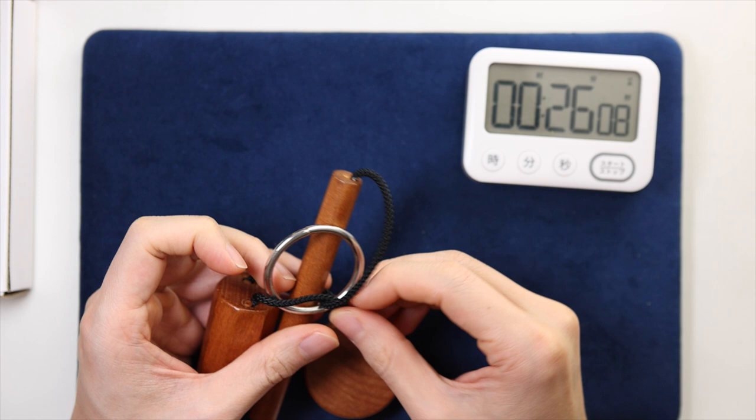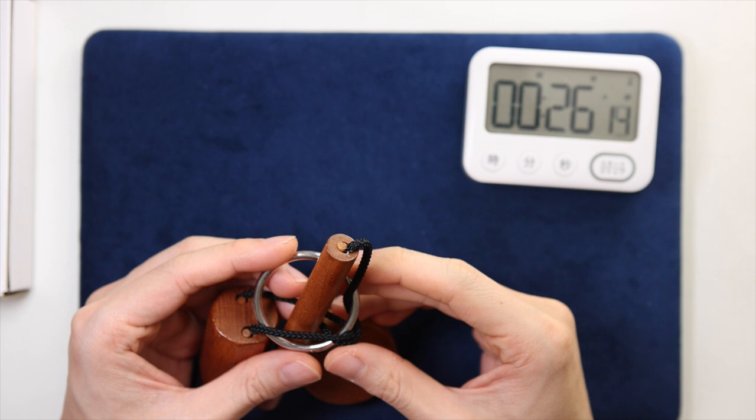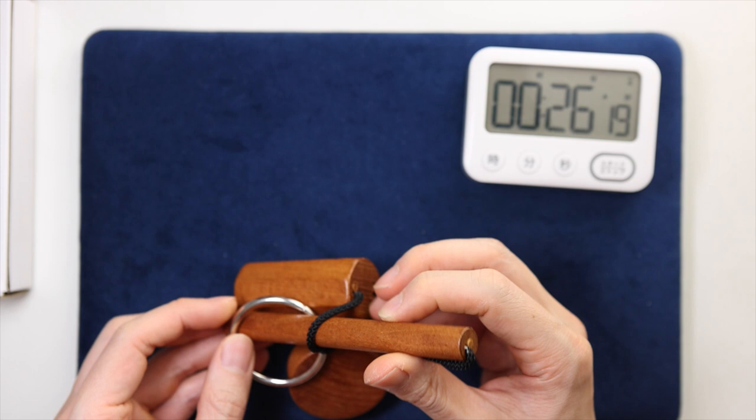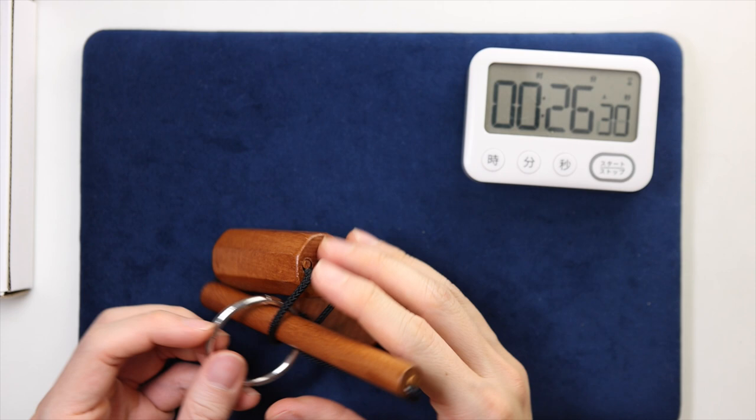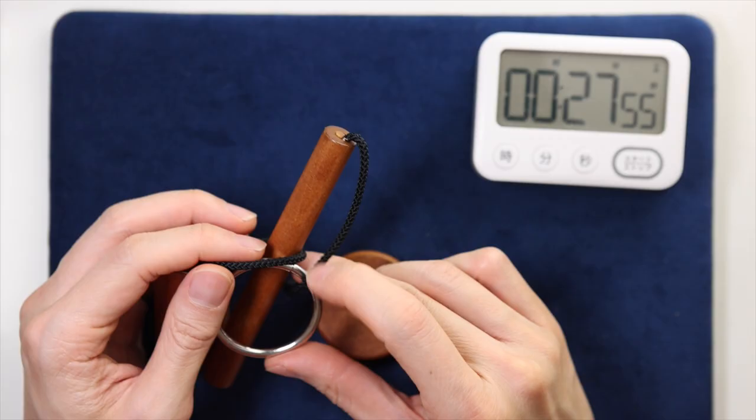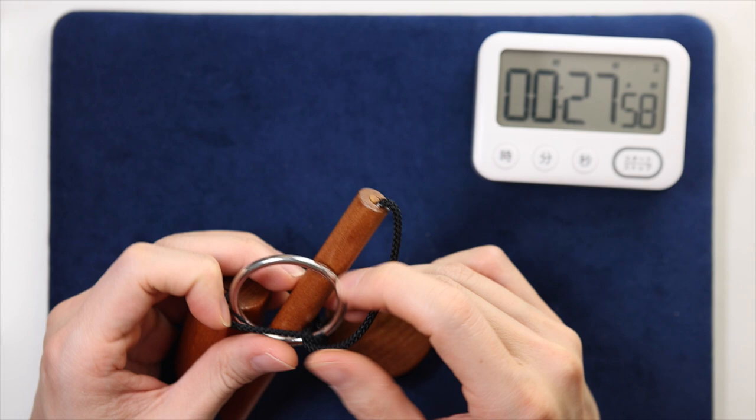Move the metal ring from the bottom to the top like this. Move it over the long pole and then push it back through the loop. Now at this position, I should be able to move the metal ring past the bottom of the puzzle. Nope, doesn't work. Okay, let's try again, the sixth time.